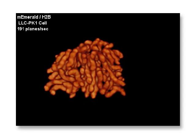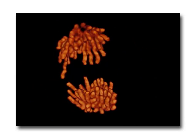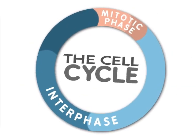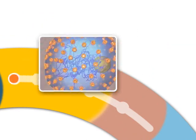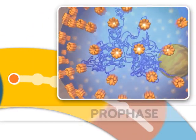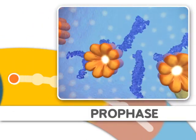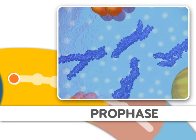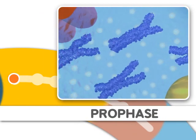Mitosis is the process of dividing the duplicated DNA of a cell into two new nuclei. Mitosis is split into distinct stages. The first stage is prophase, where the DNA condenses, organizes, and the classic chromosome structure appears.